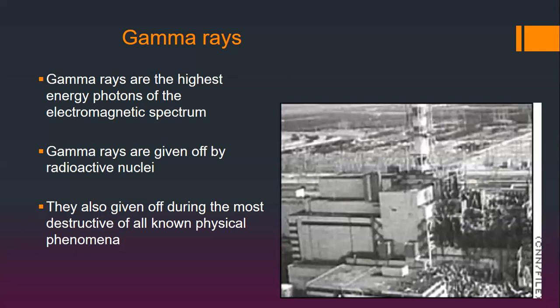When gamma rays were first discovered, researchers didn't know what they were. They identified three types of radiation: alpha rays, beta rays, and gamma rays — given Greek letters because they were unknown, similar to x-rays. Today we know alpha particles are helium nuclei, beta particles are electrons, and gamma rays are electromagnetic waves.